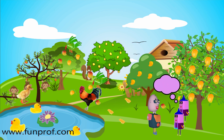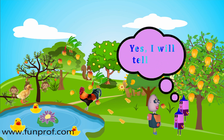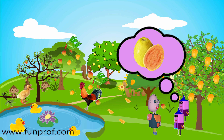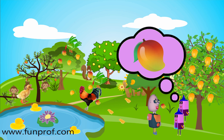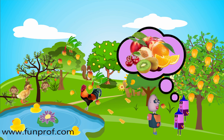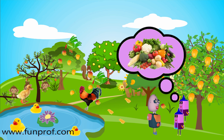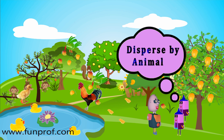His friend says, yes, I will tell you. Guava, berries, mangoes, apples — all the fruits and some vegetables are dispersed by animals.